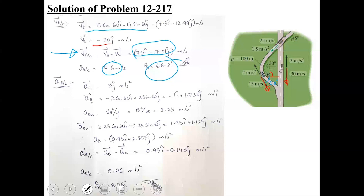Now for acceleration, we apply the relative acceleration equation. The acceleration of car C is given, directed toward the positive y-axis, so aC becomes 3j.